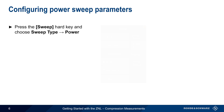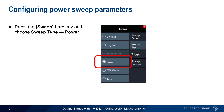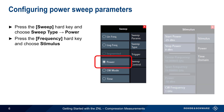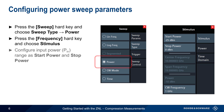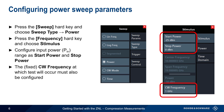Basic configuration begins by pressing the Sweep hard key and then choosing Sweep Type Power. Then press the Frequency hard key and choose Stimulus. The most important parameters to configure are the start and stop powers in dBm — this is the input power to the device under test, and the ZNL will sweep over this power range during the test. The other important parameter is CW Frequency, which is the fixed frequency at which this test is performed.